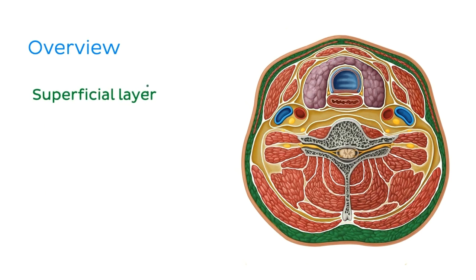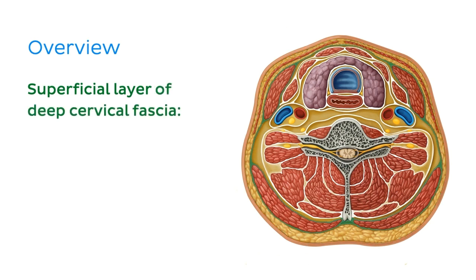We'll start with the superficial layer of cervical fascia, which is actually the subcutaneous tissue of the neck. Simple as it is, it'll allow us to jump right into the subdivisions of the deep layer of the cervical fascia, which are the superficial, middle and deep layers. First, there is the superficial layer of deep cervical fascia, which is associated with the muscles immediately deep to the skin.